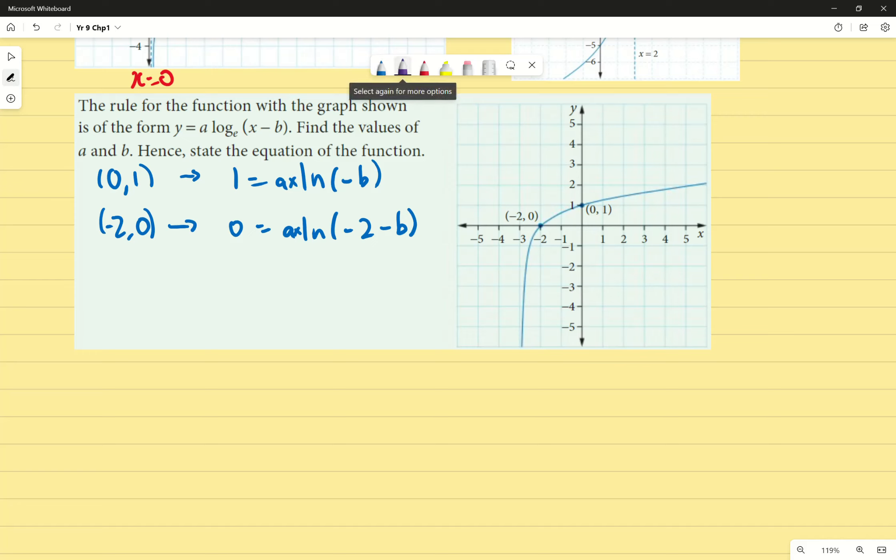0 equals a times log base e of negative 2 minus b, divided by, and I'm just going to write the bottom one here, so that becomes divided by 1 equals a times log base e of negative b. Because it's a simplification, these two cancel out, and that becomes 0. So we end up with 0 equals log base e of negative 2 minus b over log base e of negative b. Because I'm just simplifying, I know that negative 2 minus b and we've got negative b on the bottom, I can multiply both sides by log base e of negative b, which then becomes 0 equals log base e of negative 2 minus b.